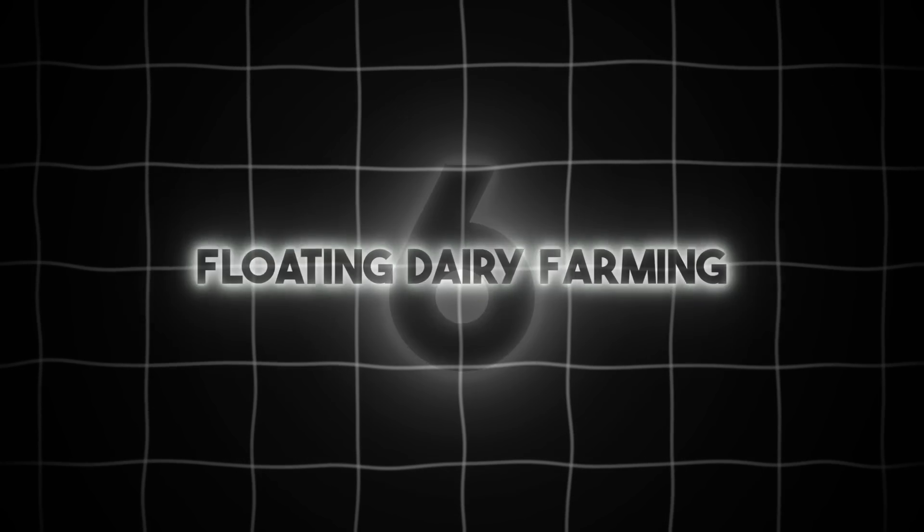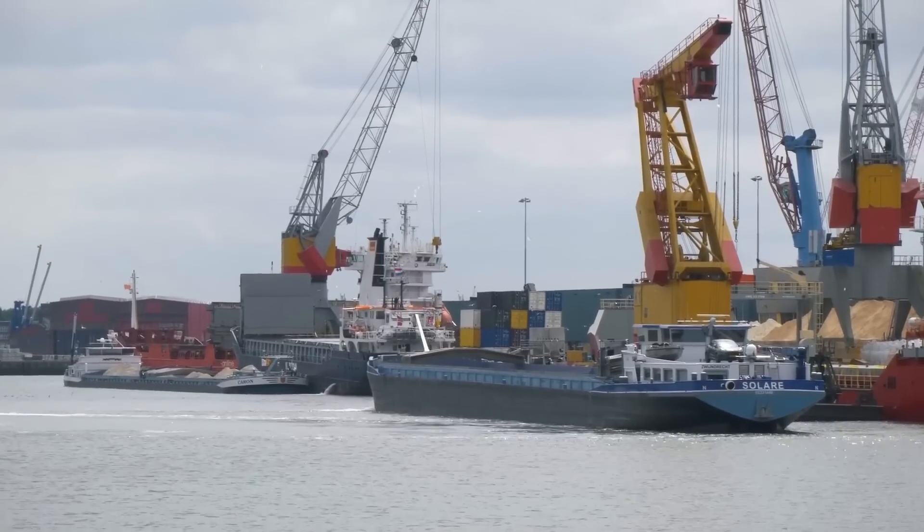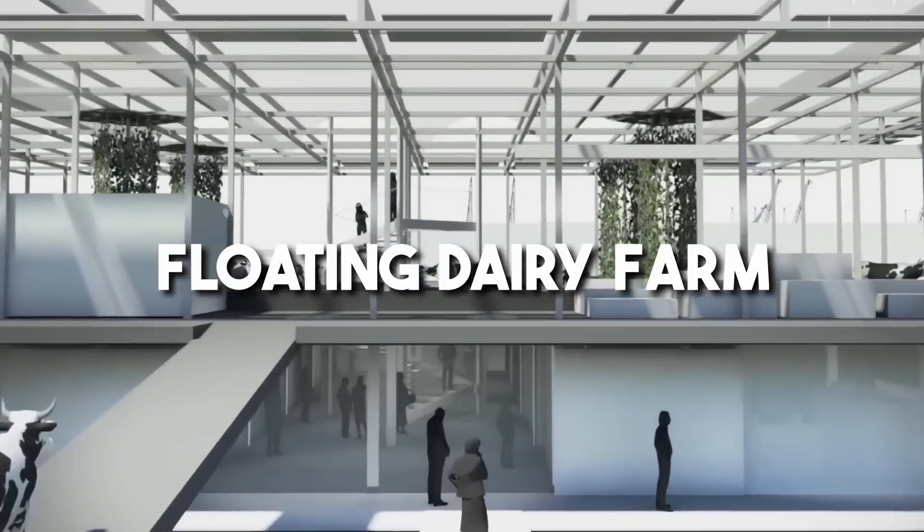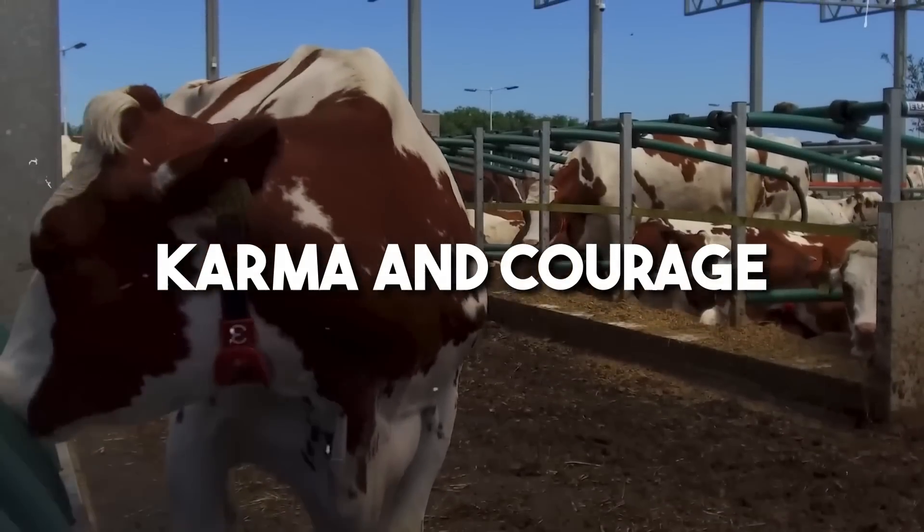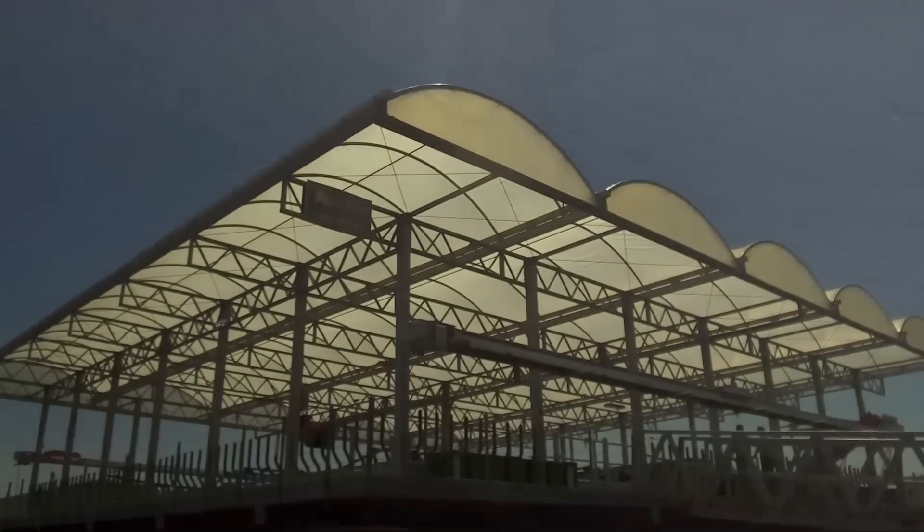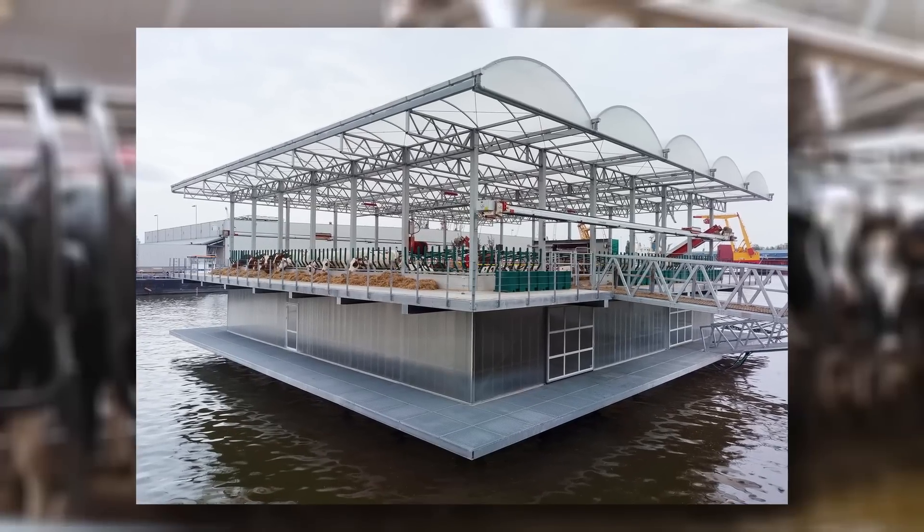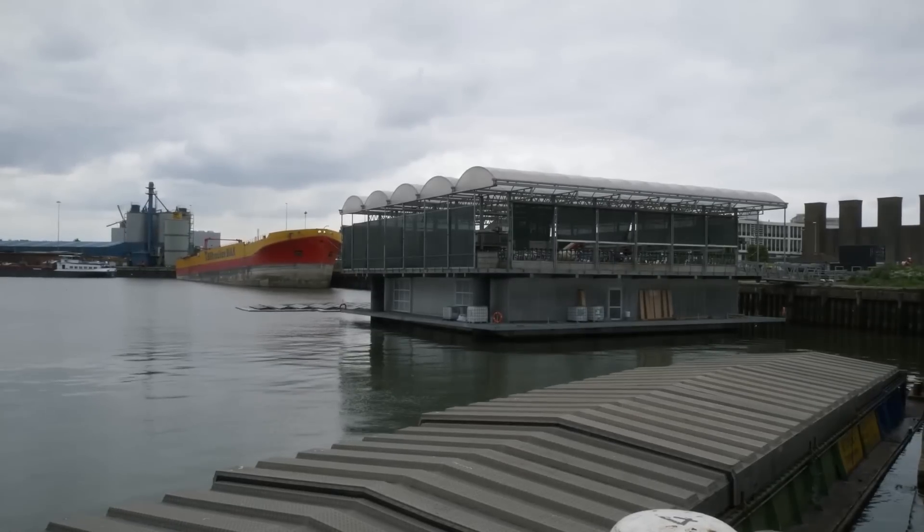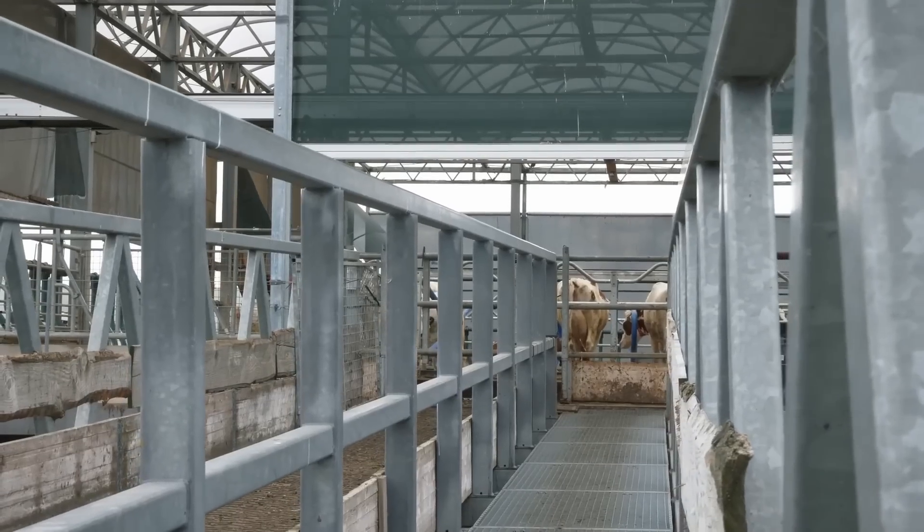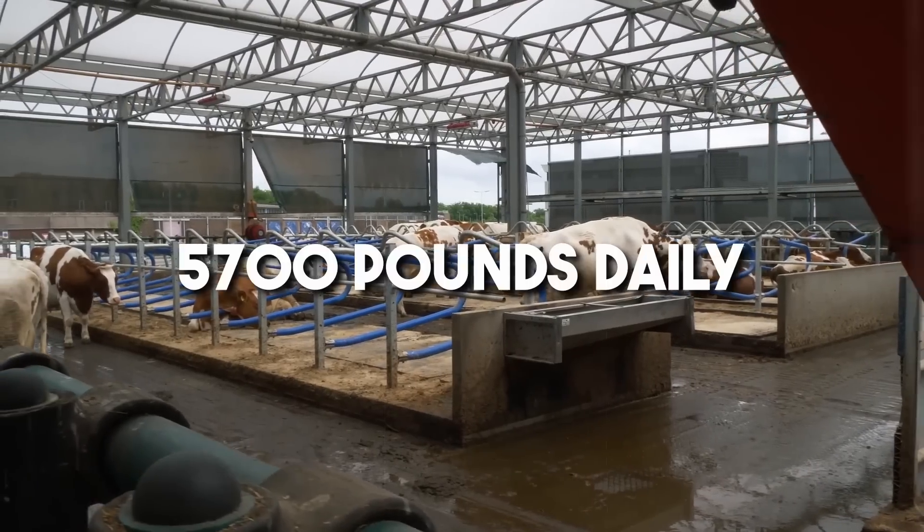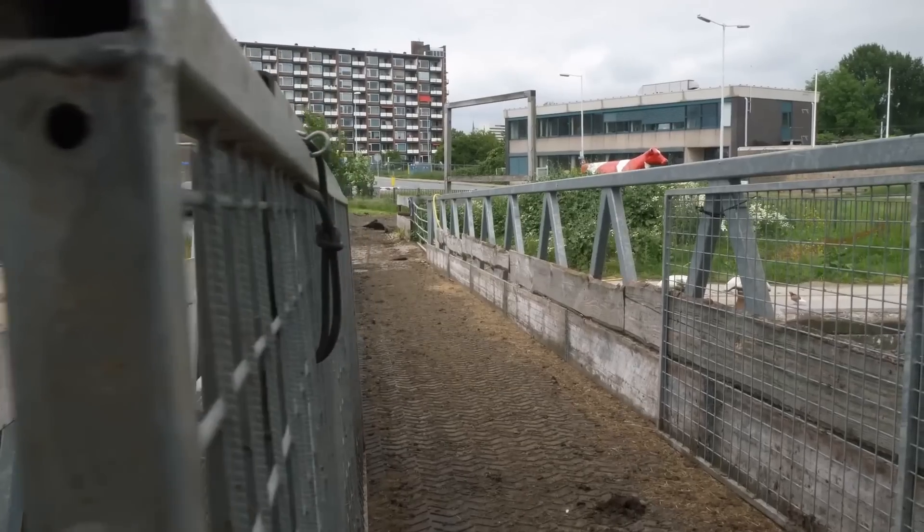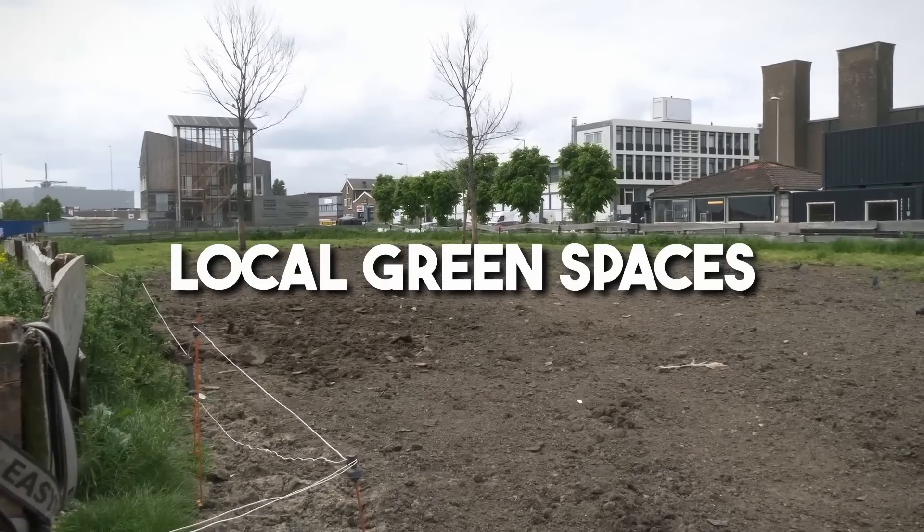Number 6, Floating Dairy Farming. In Rotterdam's bustling harbor, a pioneering concept takes shape, the world's first floating dairy farm, housing Karma and Courage, two extraordinary cows. These bovines, along with 32 counterparts, reside aboard this innovative structure, grazing on potato peels and grass clippings. What sets this venture apart is its sustainable cycle. The cow's waste, over 5,700 pounds daily, is collected by a robotic system and repurposed into fertilizer for local green spaces.